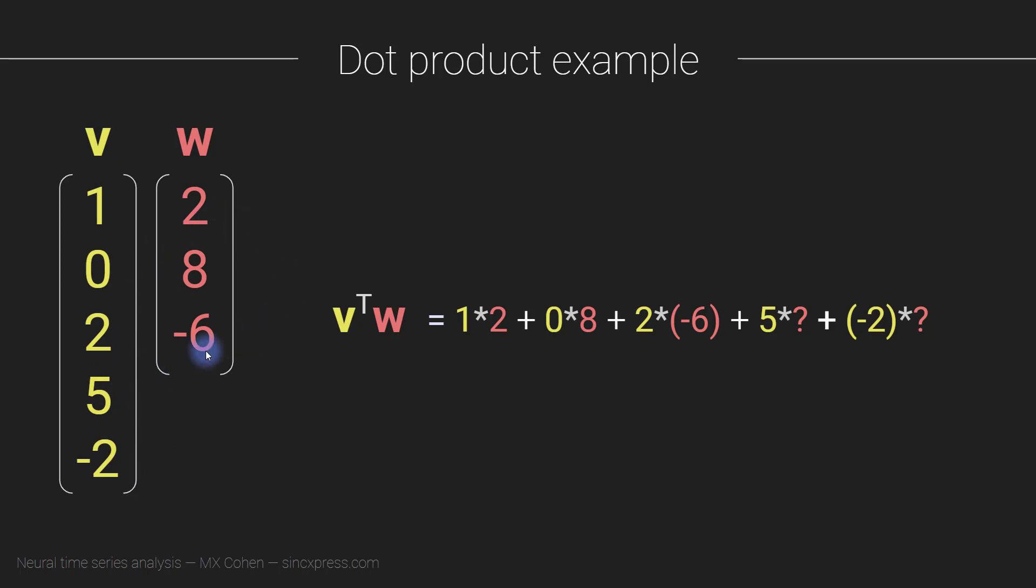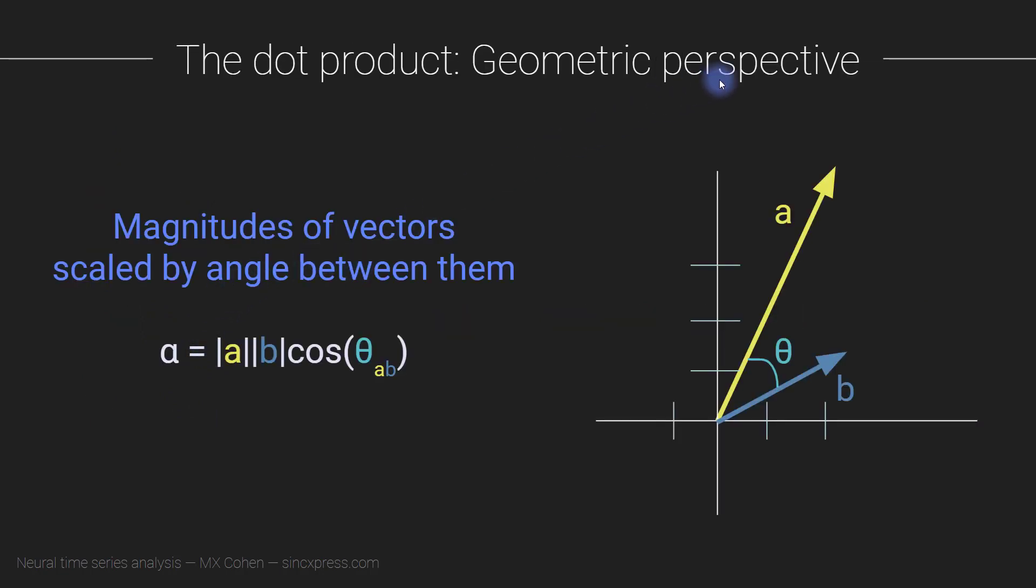This is the algebraic formula for computing the dot product. There's also a geometric interpretation. We think about these two vectors, these lists of numbers, as corresponding to vectors in some high dimensional space. If we have vectors with two elements, it's easy. We can think about the first element being the x dimension and the second element being the y dimension. Each vector corresponds to a line on this plane. The dot product between these two vectors a and b is the magnitude of a times the magnitude of b times the cosine of the angle between them. That's the length of this line times the length of this line, scaled by the cosine of the angle between these two vectors.